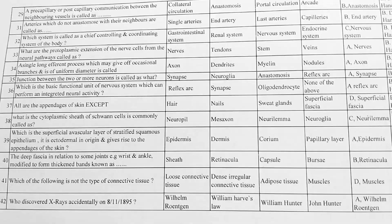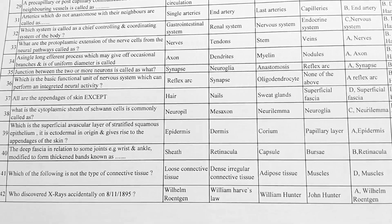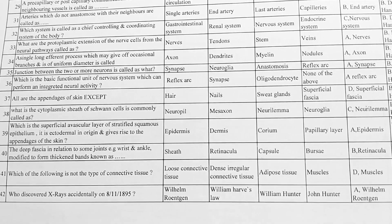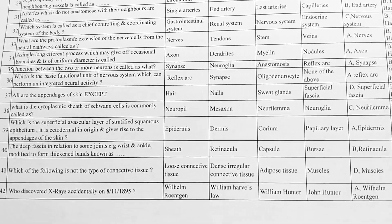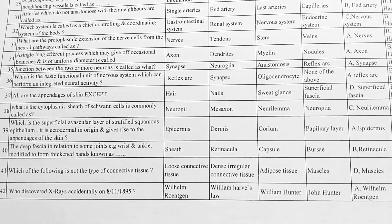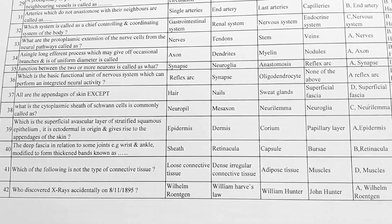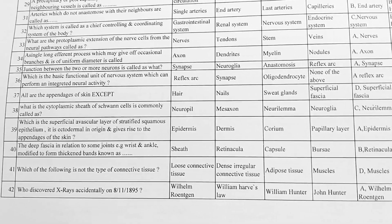Next, which system is called the chief controlling and coordinating system of the body? Options: A. gastrointestinal system, B. renal system, C. nervous system, D. endocrine system. Correct option is C, nervous system.